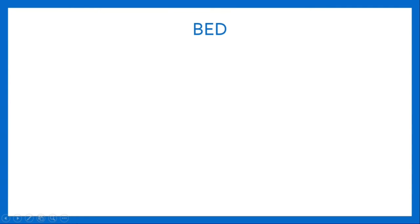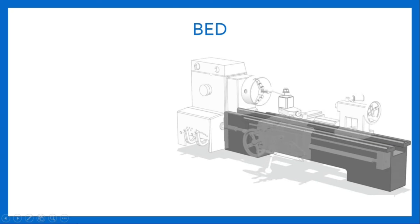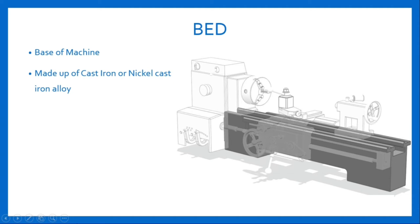The first major component mounted on Lett Machine is the bed. Here is a figure of bed. The bed of Lett Machine forms the base of the machine on which all the other parts of Lett Machine are mounted. It is supported on two legs at a convenient height which is bolted to the floor. The bed is made up of cast iron or nickel cast iron alloy and its top surface is machined accurately and precisely.